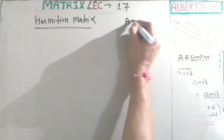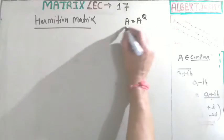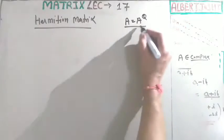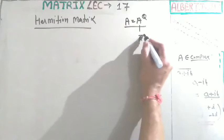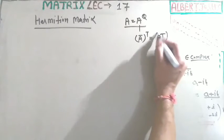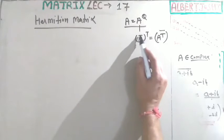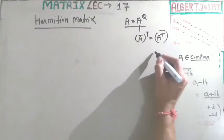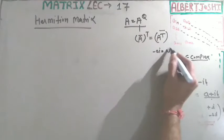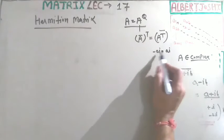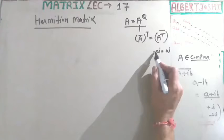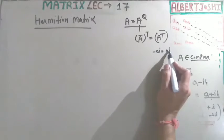If A is equal to A-theta, then we say that this is Hermitian. What is theta? Theta is the conjugate transpose — also written as the transpose conjugate. The conjugate means if you have minus i, it becomes positive i; the negative imaginary part converts to positive.